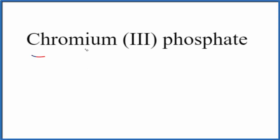In this video, we'll write the formula for chromium-3-phosphate. So let's first write the element symbol for chromium, that's C-R, and then we know this Roman numeral here tells us the charge on the chromium. So chromium will be 3+. That's really useful.